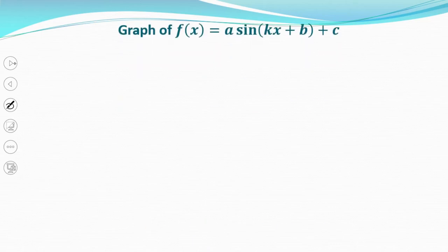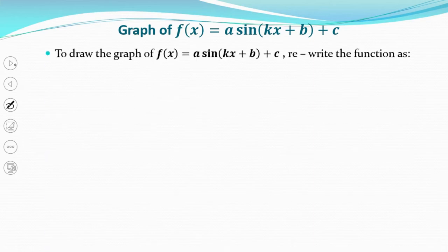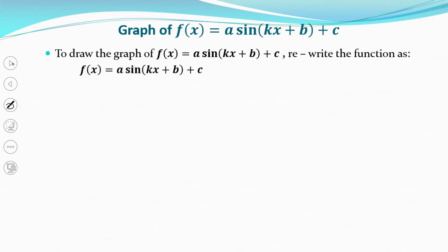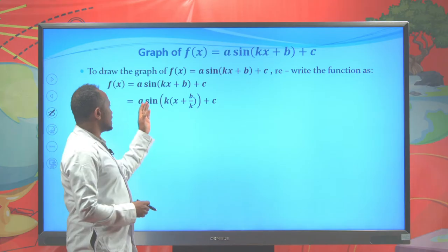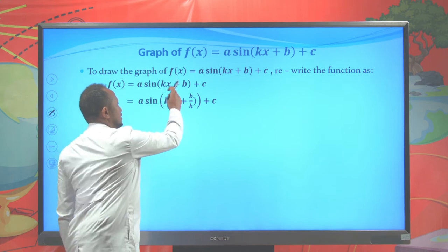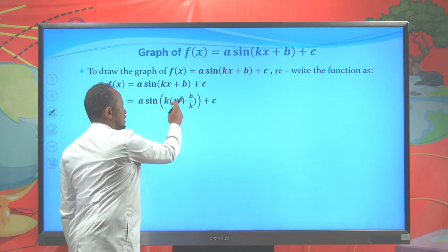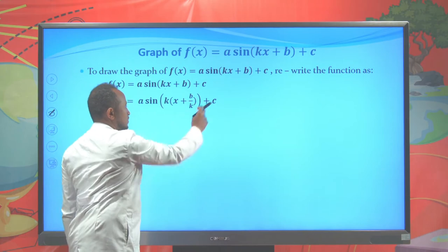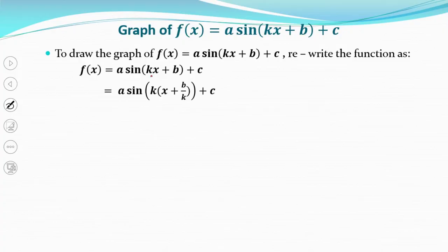Graph of f(x) = a·sin(kx + p) + c. To draw this graph, rewrite the function first by factoring out k: f(x) = a·sin(k(x + p/k)) + c. When you factor k, you get x + p/k inside the sine, plus c outside. We need to rewrite the function in this form first.